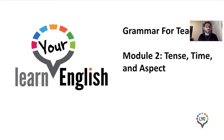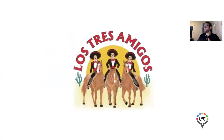We will also be looking at the English verb phrase at the formal, informal, and semantic levels. We will begin by looking at what we like to call the three amigos of language, of English — starting with time and tense and the difference between these two.